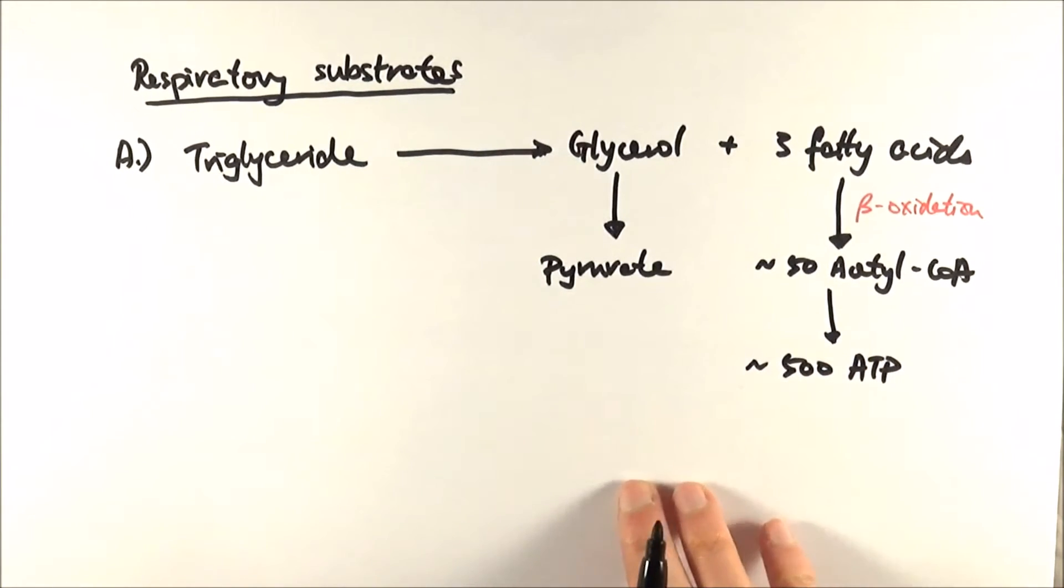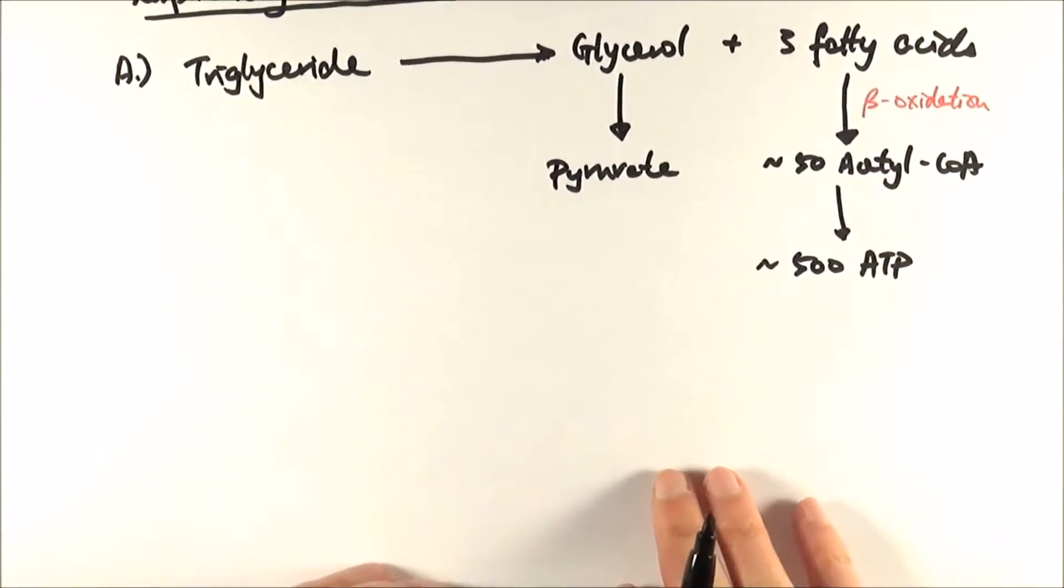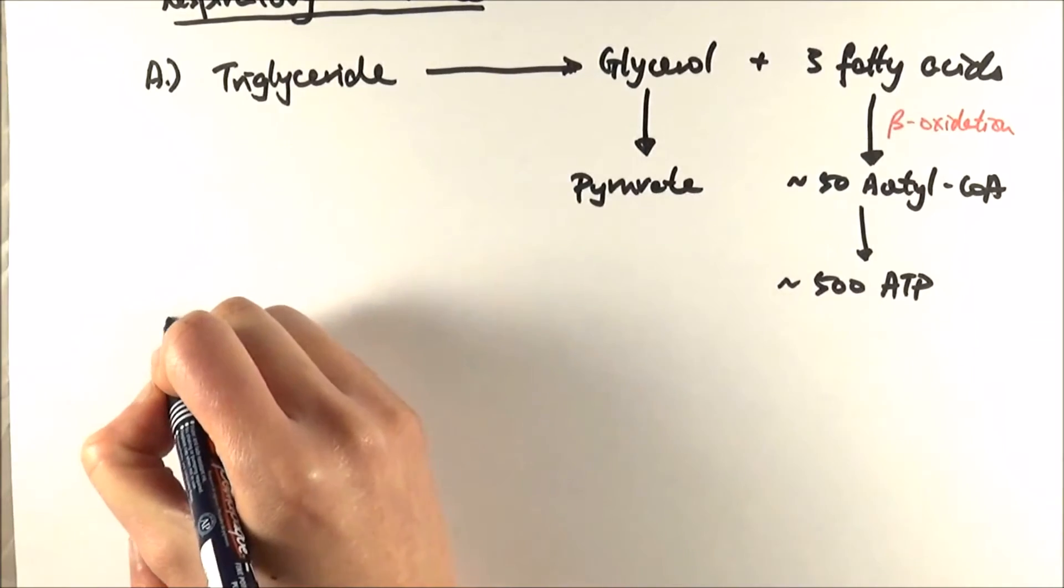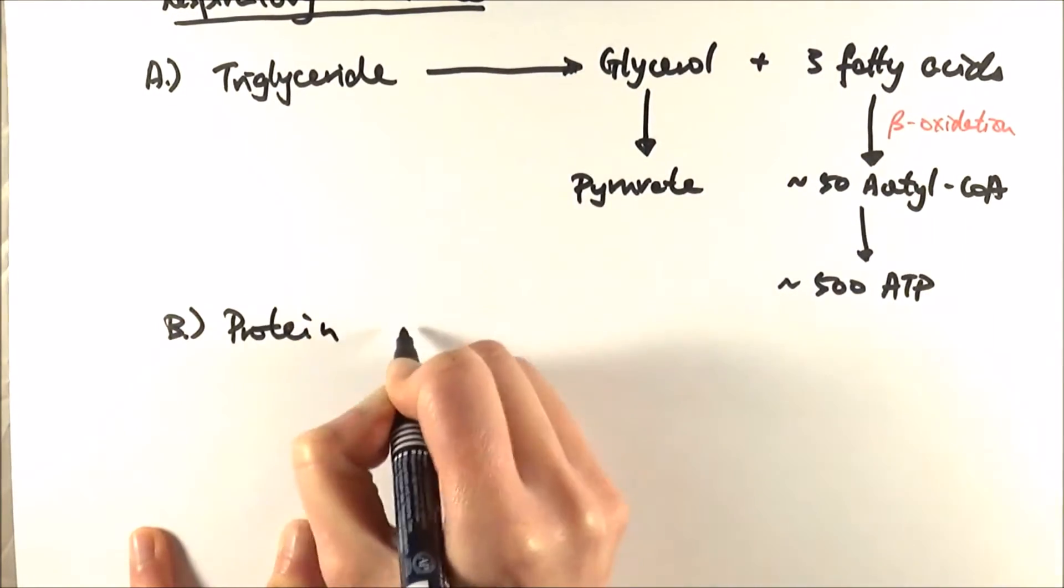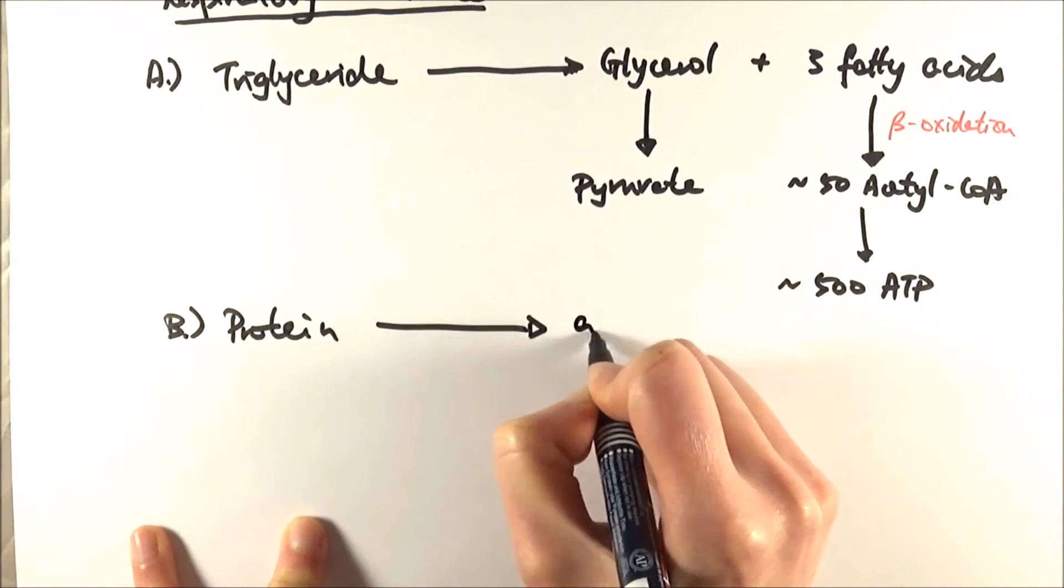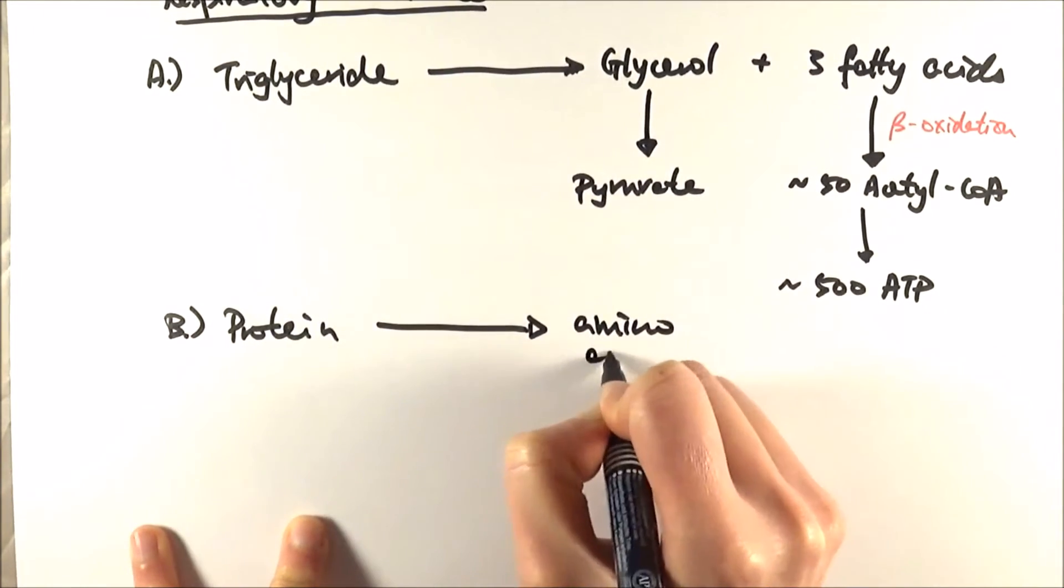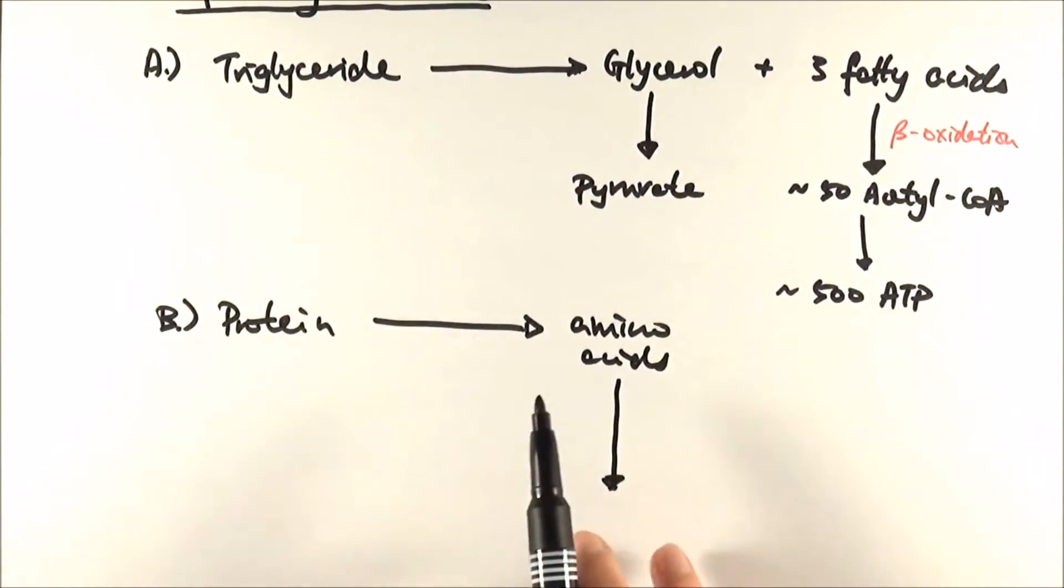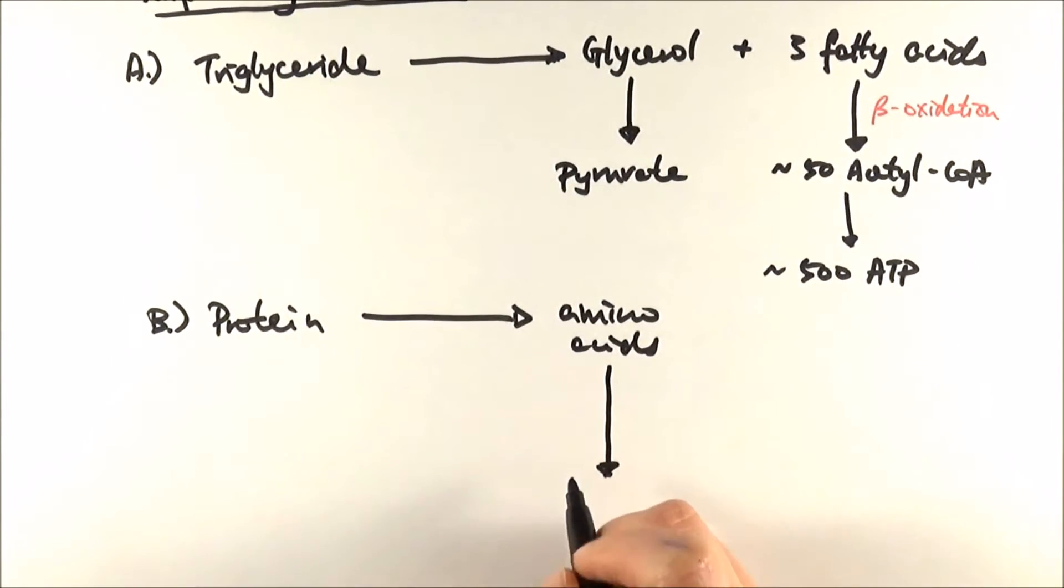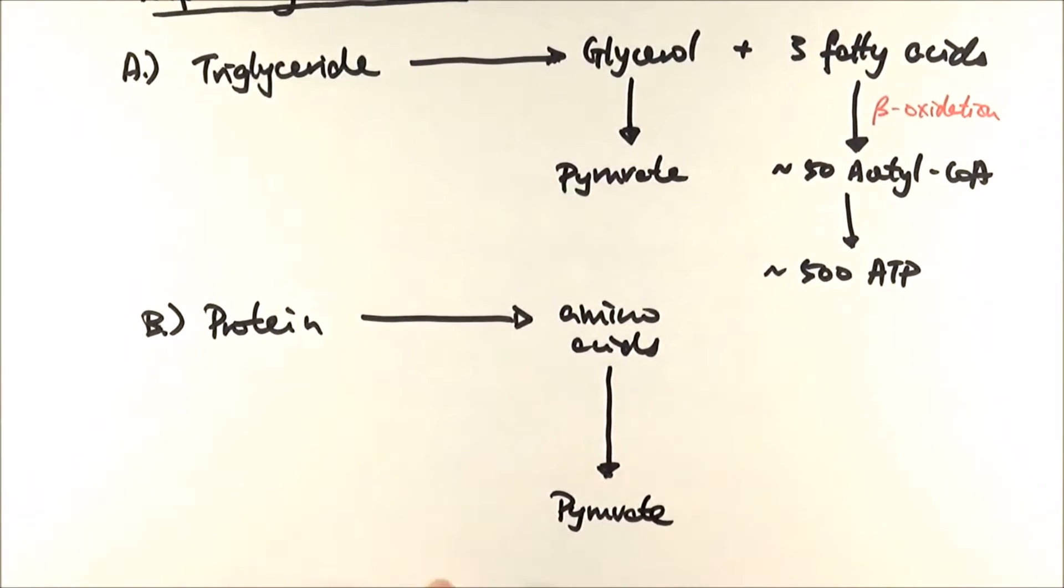If we also run out of lipids we can start using up our protein stores like the ones in our muscles. Thinking back to AS, proteins are made up of amino acids. Amino acids contain an amine group and we want to get rid of that to make pyruvate. The process of removing an amine group is what we call deamination.